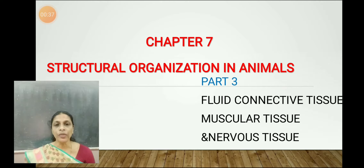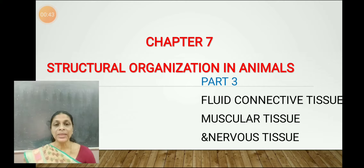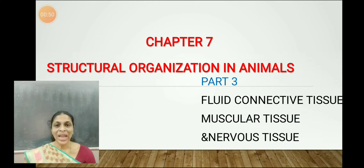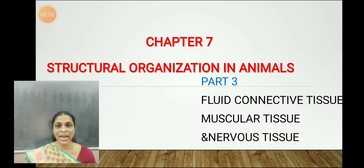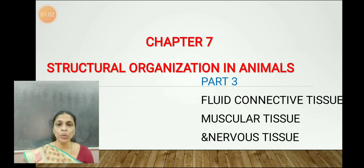Now the third type of connective tissue is fluid connective tissue. Fluid connective tissue is that fluid which connects various parts of the body and is in constant motion in our body — that is nothing but the blood. Today let's discuss in detail about the two fluid connective tissues: one is the blood, another one the lymph.